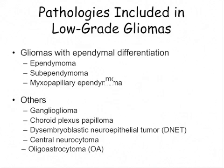There are also the less common tumors, such as those with ependymal differentiation — the ependymomas and subependymomas — and then others such as gangliogliomas, DNETs, and neurocytomas.